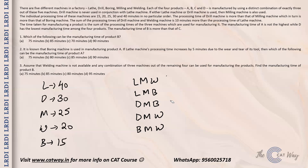Calculating manufacturing times for each combination: L, M, W = 40+25+20 = 85 minutes; L, M, B = 40+25+15 = 80 minutes; D, M, B = 30+25+15 = 70 minutes; D, M, W = 30+25+20 = 75 minutes; B, M, W = 15+25+20 = 60 minutes.